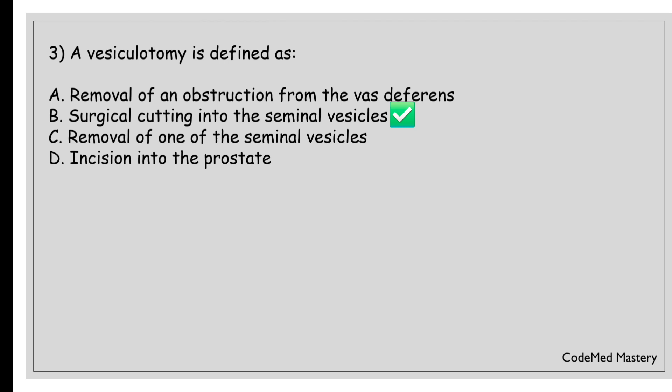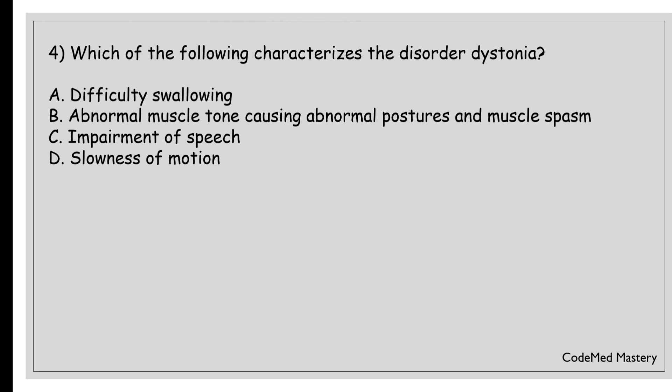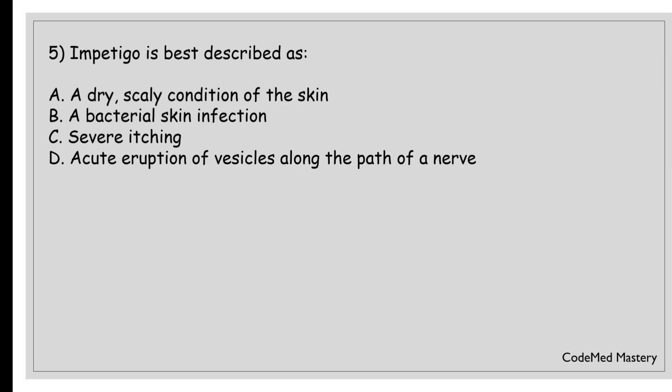Next question: which of the following characterizes the disorder dystonia? Option A, difficulty swallowing; option B, abnormal muscle tone causing abnormal postures and muscle spasm; option C, impairment of speech; option D, slowness of motion. The correct answer is option B, abnormal muscle tone causing abnormal postures and muscle spasm. Dystonia is a neurological movement disorder characterized by involuntary muscle contractions that cause repetitive movements or abnormal postures.